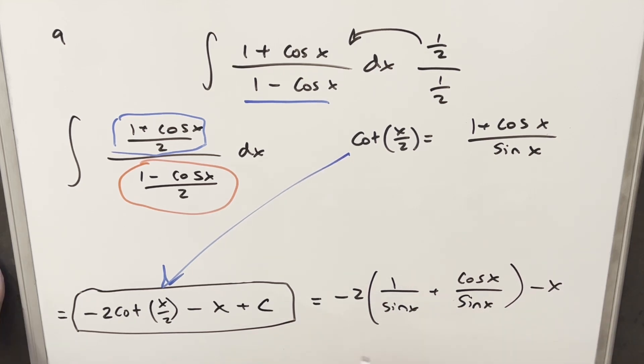But then this is just cosecant. This is just cotangent. So for my alternative solution, we're going to have minus 2 cosecant x minus 2 cotangent x minus x plus c. And that's it.